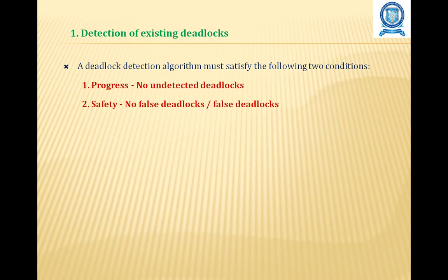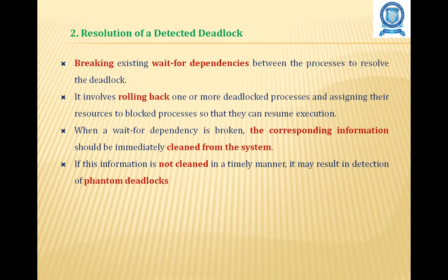This is the main reason why many deadlock detection algorithms are incorrect. The second issue is resolution of a detected deadlock. Deadlock resolution involves breaking the existing wait-for dependencies between processes, which involves rolling back one or more deadlocked processes and assigning their resources to blocked processes so they can resume execution. The deadlock detection algorithms propagate information regarding wait-for dependencies along the edges of the wait-for graph. When a wait-for dependency is broken, the corresponding information should be immediately cleaned from the system; otherwise, it may result in detection of a phantom deadlock.